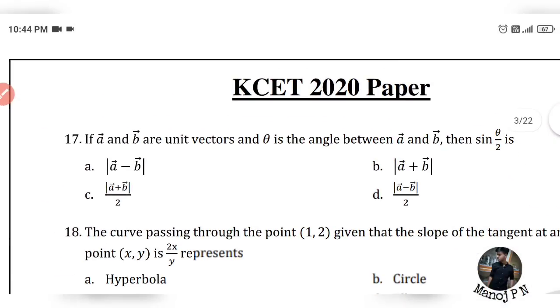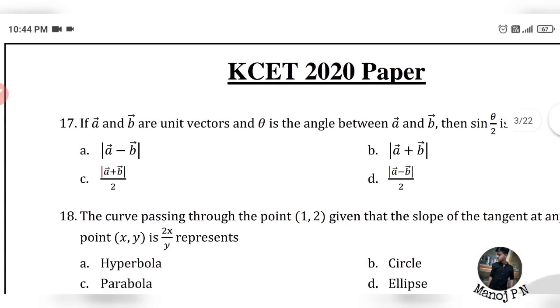So the answer is |a - b| divided by 2, which is option D.